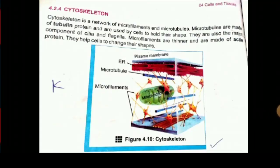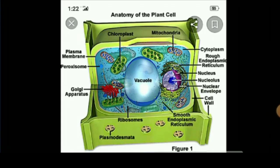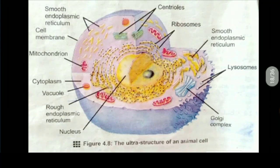Our next topic is the cytoskeleton on page number 60. The cytoskeleton is basically a network of microfilaments and microtubules. Microfilaments are thin filaments made up of actin protein, while microtubules are thick filaments made up of tubulin protein. Microtubules function to hold the shape of the cell, while microfilaments help to change the shape of the cell. The ultra-structure diagrams show plant and animal cells containing various organelles like chloroplast, mitochondria, and Golgi apparatus, which will be discussed in detail next.